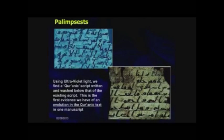The lower script is known as the defective script; the upper script is known as the final script. When they looked at the defective script of the Sanaa manuscript, they noticed that it was from the time of Abd al-Malik — basically the last two decades of the 7th century. The upper script was from the time just after Abd al-Malik, probably Marwan or his son, Ibn Malik.